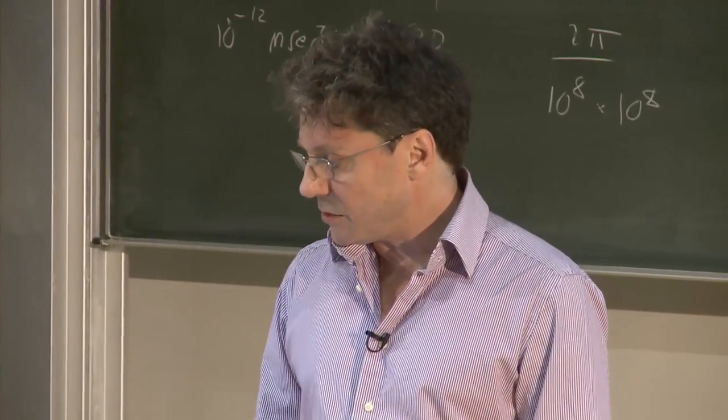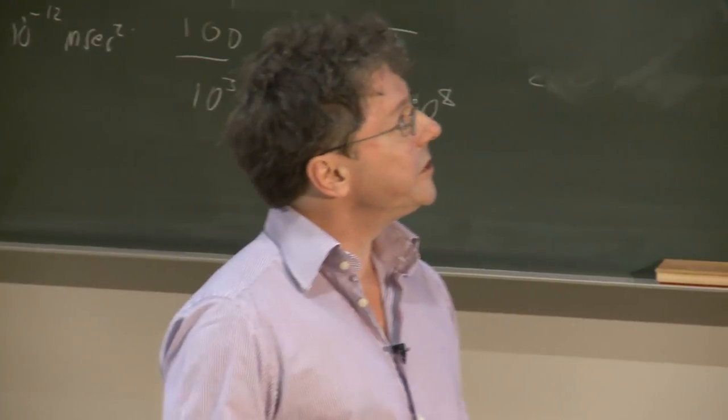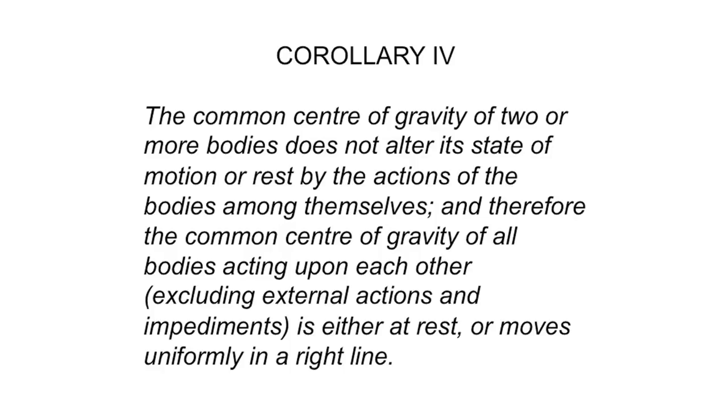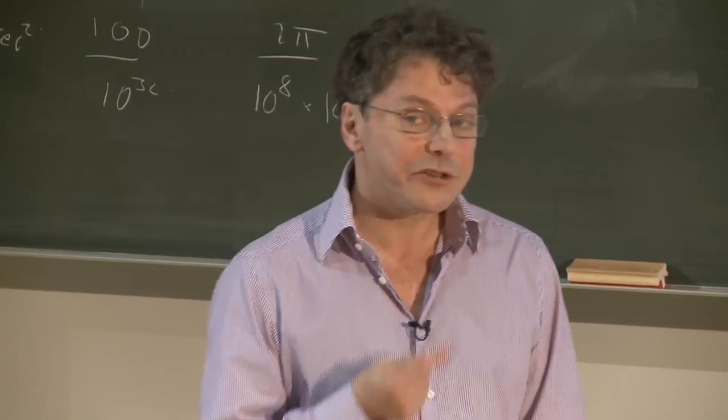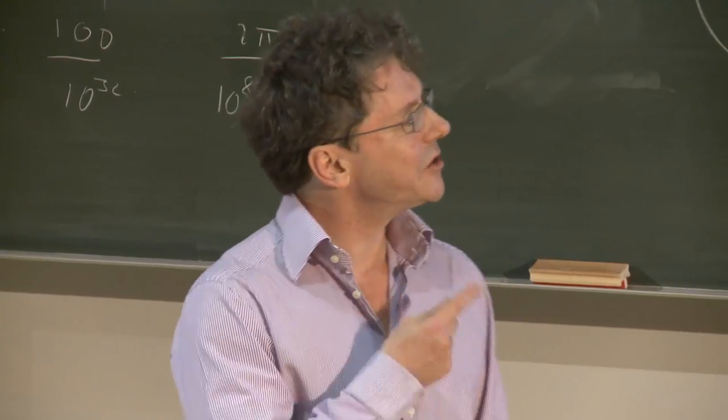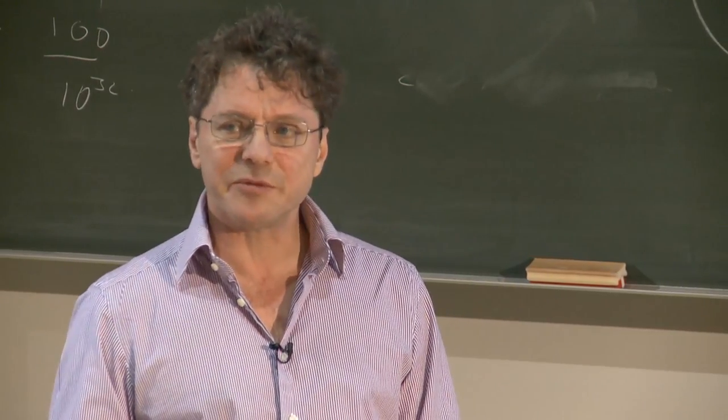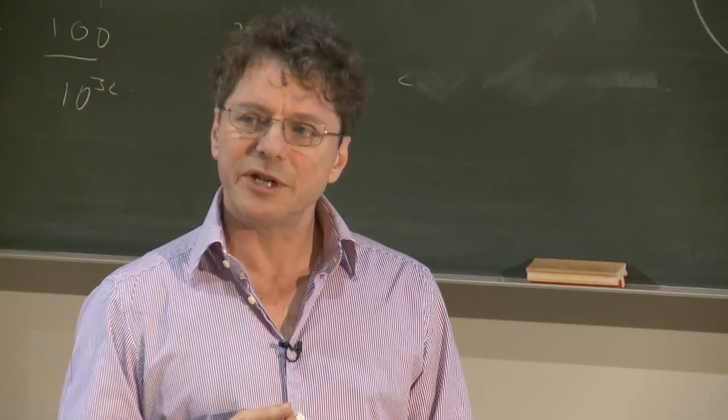If we go to corollary four, what we see is that the common centre of gravity of two or more bodies does not alter its state of motion or rest by the actions of the bodies among themselves. And therefore, the common centre of gravity of all bodies acting upon each other, excluding external actions and impediments, is either at rest or moves uniformly in a right line. So there's the crucial get-out clause, excluding these external actions and impediments. But that's just what we can't do.